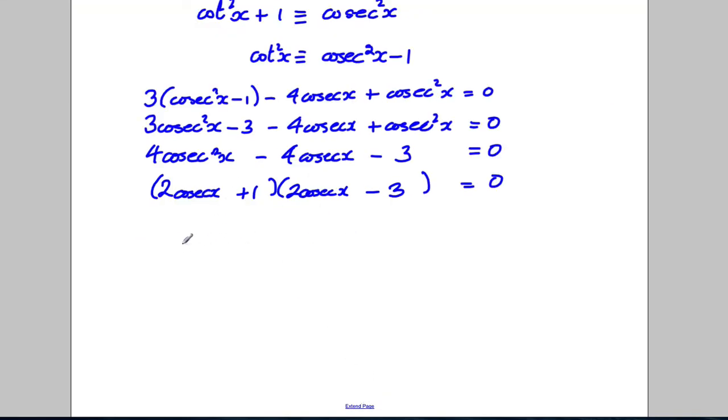At this point therefore, we've got 2 answers. We've got that cosec is either, from this one, negative 1 half or from this one, cosec x is 3 over 2.